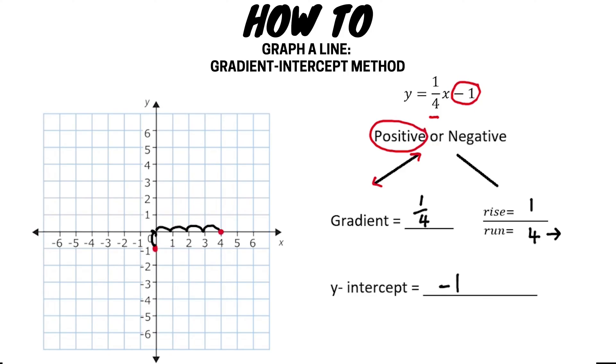As soon as you have marked down two points you can draw a line connecting the two points. It's good practice to extend your line beyond these points, to put arrows on either end of the line to indicate the line continues on in both directions, and to write the equation on the line. And so there you have the line y equals a quarter x minus one.